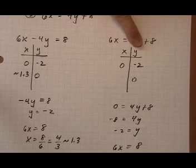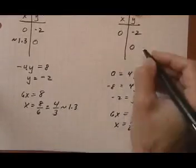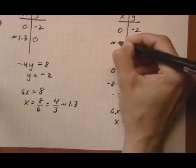which is 4 over 3, or approximately 1.3. So when y is 0, x is approximately 1.3.